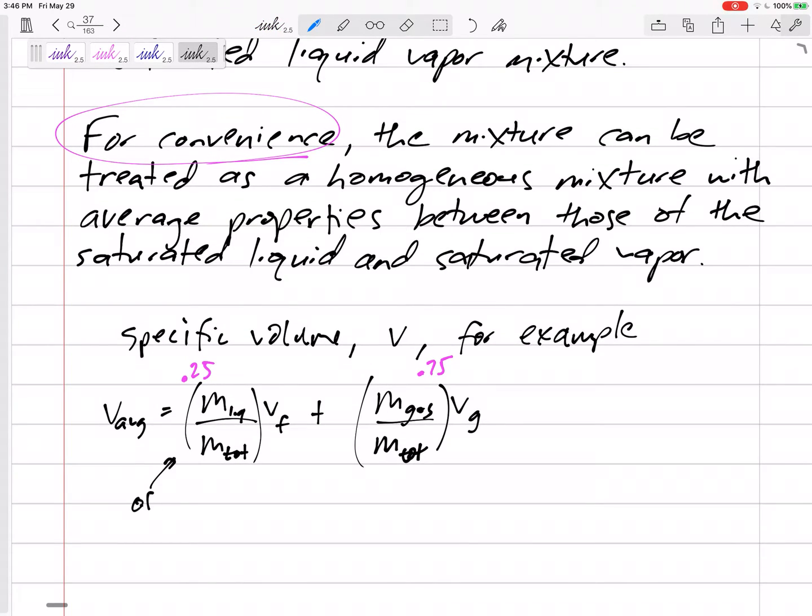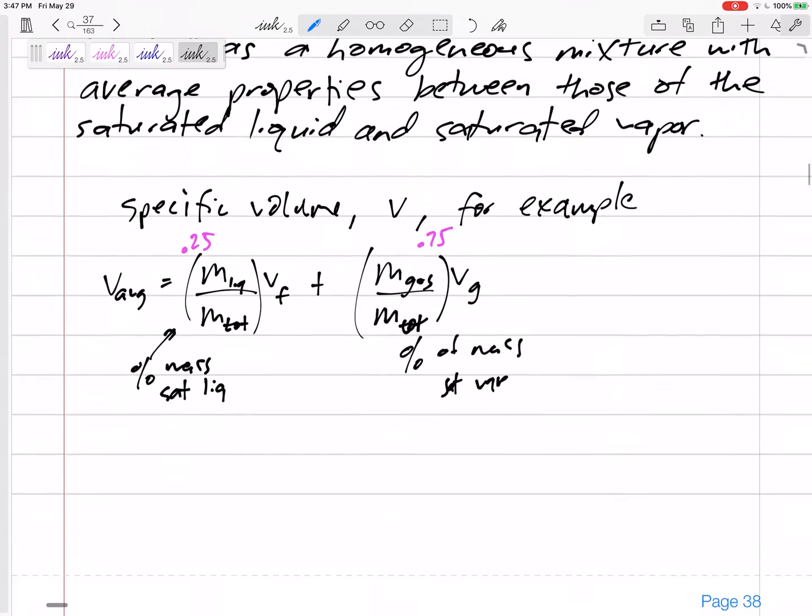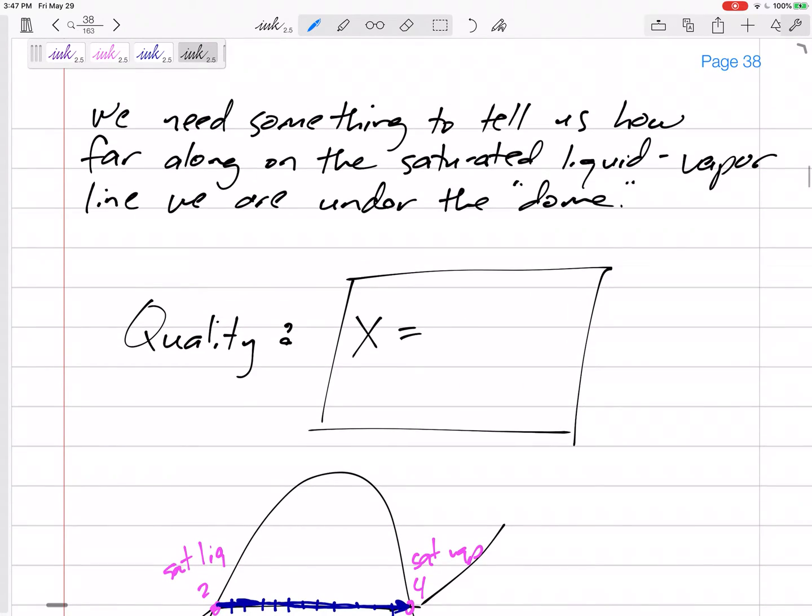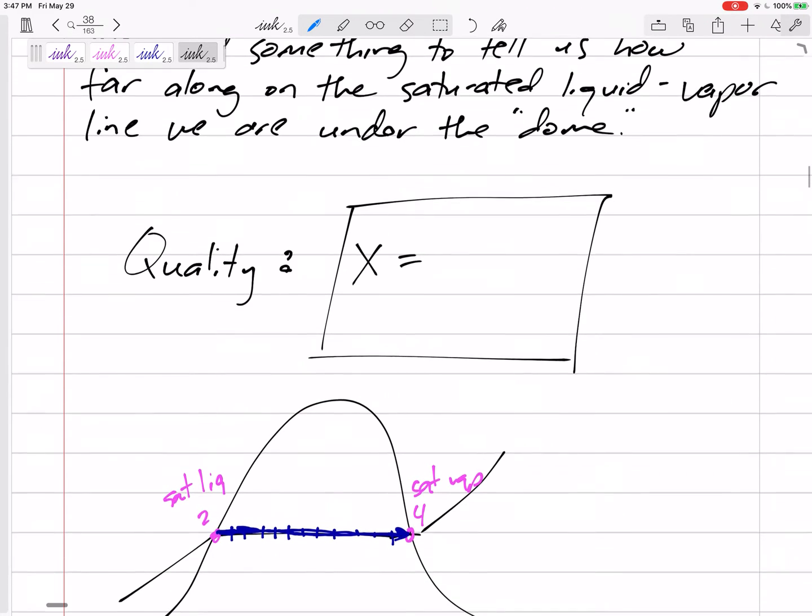This is the percent of the mass that is still saturated liquid. This is the percent of mass that is still saturated vapor. That's one way to do it. But let's think of an easier mathematical way to do that same thing. And so that's going to get us to quality. Quality tells us how far along it is in transforming from all liquid to all vapor. We need something to tell us how far along the saturated liquid vapor line we are under the dome.